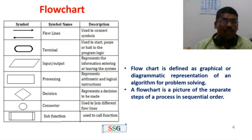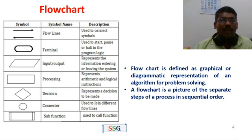Next: Connector symbol. Used to join different flow lines. The connector symbol is used when the flowchart continues across pages — for example, to draw the flowchart for a given problem across multiple pages.